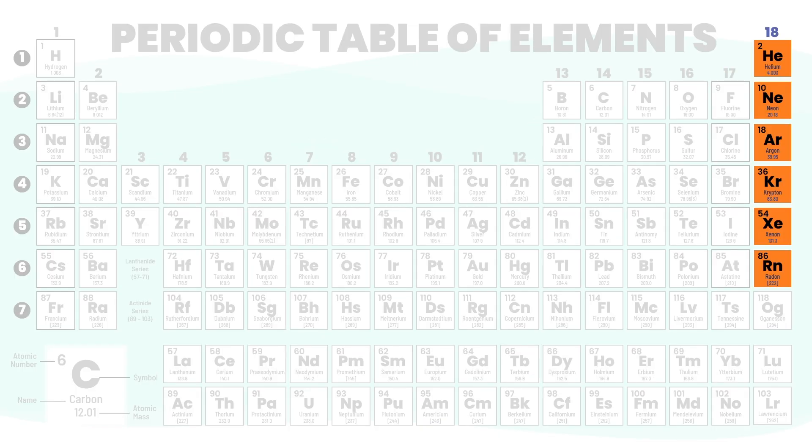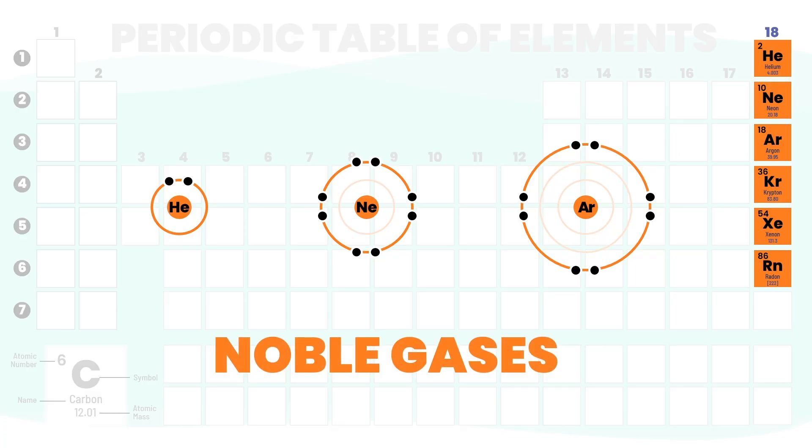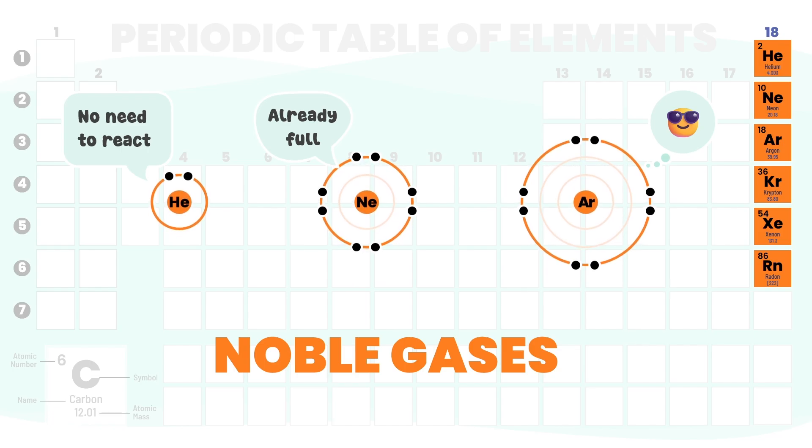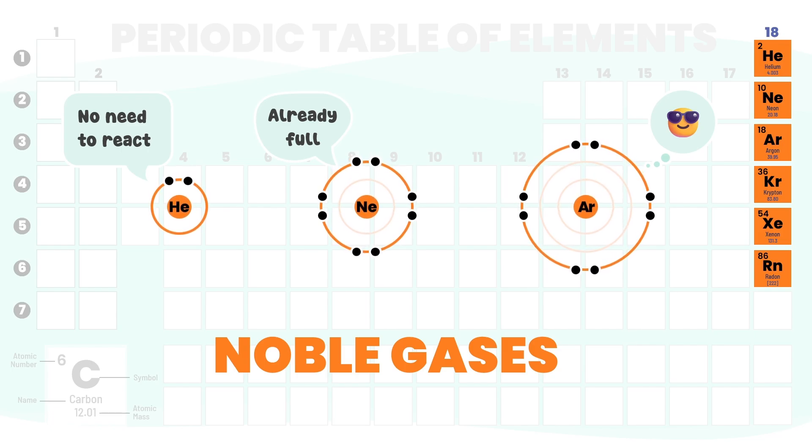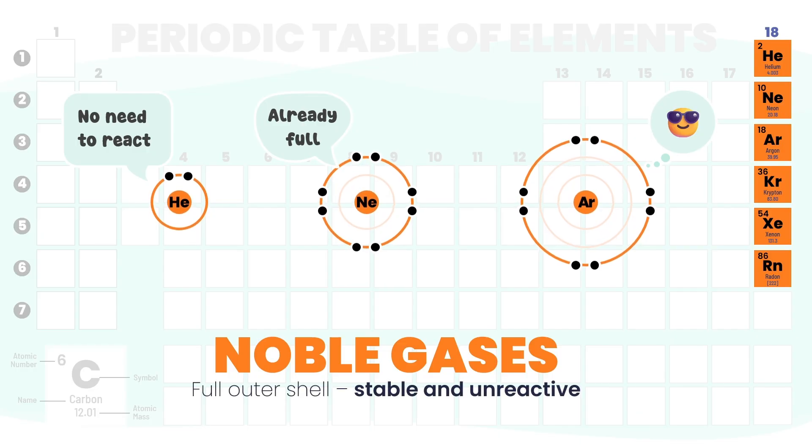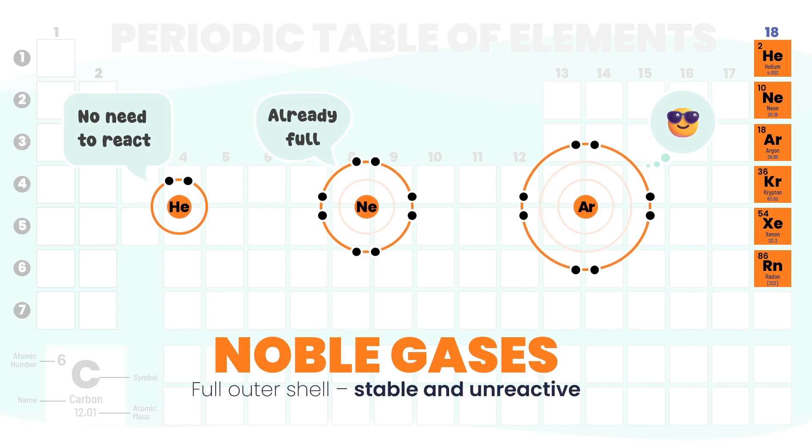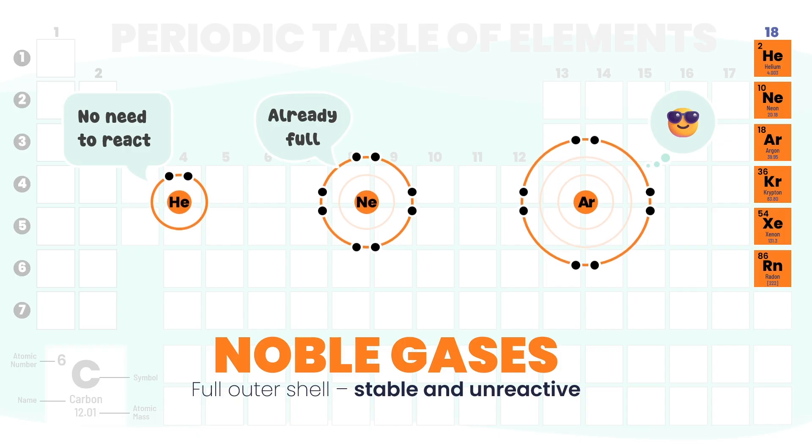And finally, look at group 18, the noble gases. These atoms already have full outer shells - they don't want to gain, they don't want to lose. They are the introverts of the periodic table - totally stable, totally unreactive. No bonding, no trading, just chill.